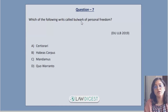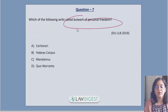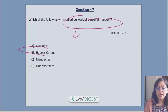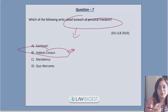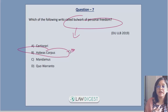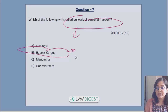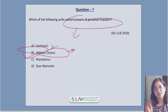Question 7: which of the following writs is called a 'bulwark of personal freedom'? As mentioned at the start, the writ of habeas corpus means 'to have the body.' It represents personal freedom — our bodily freedom belongs to us and nobody can illegally detain us. The answer to this question is option number B.